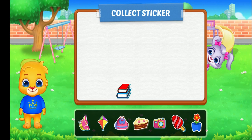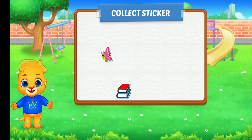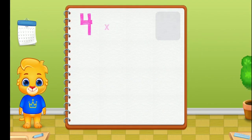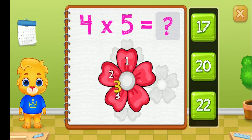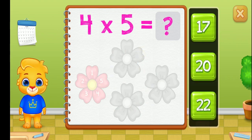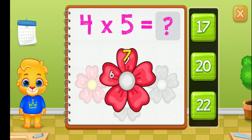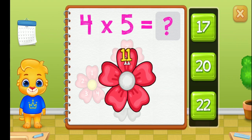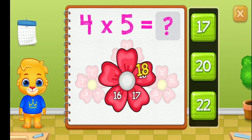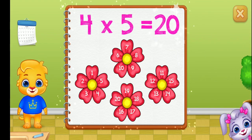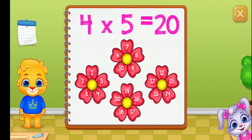Pick a sticker. One, two, three, four, five, six, seven, eight, nine, ten, eleven, twelve, thirteen, fourteen, fifteen, sixteen, seventeen, eighteen, nineteen, twenty. Four groups of five equals twenty.